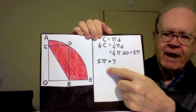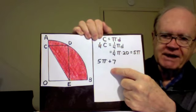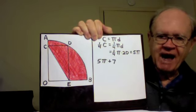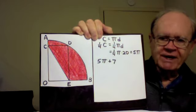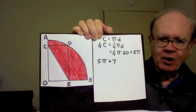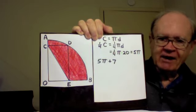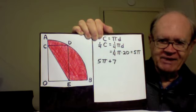20 minus 13 leaves 7 units for the combined lengths AC and BE. And so, so far we have 5π plus 7. Now what remains is the slanted length CE. Well CE is a diagonal of that rectangle. The other diagonal OD is not shown. Diagonal OD is a radius of the circle, so its length is 10 units. The two diagonals of a rectangle are equal in length. That's a fact of geometry. And since OD has length 10, CE also has length 10.